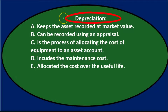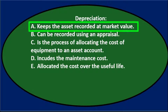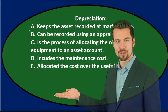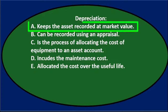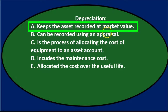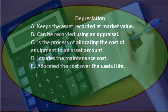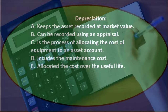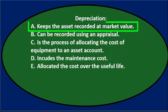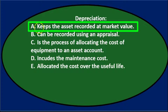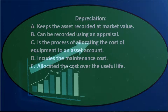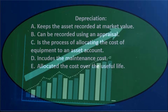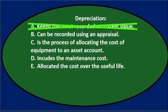Depreciation is the question. We're going to go through a process of elimination. Depreciation A: keeps the asset recorded at market value. This is an important point because it will be asked in multiple choice questions multiple different ways. It's important to know that we're going to be allocating the cost and not keeping in alignment with the market value. Our estimate may not line up to the market value going forward, but we're still going to allocate the cost out. The market value could even go up and we would be writing it down because we're allocating the cost to the useful life. It's not going to be A.